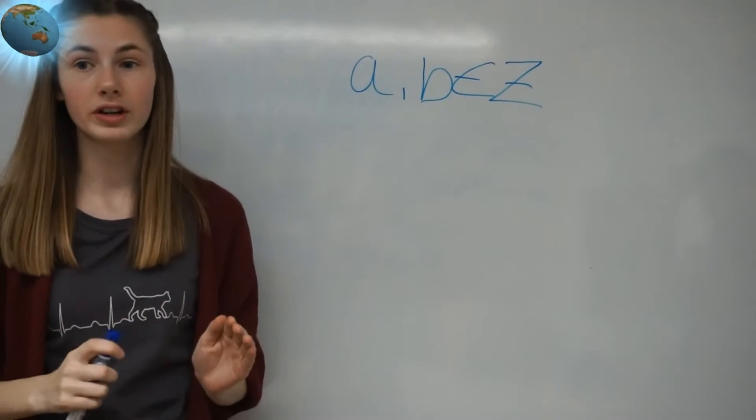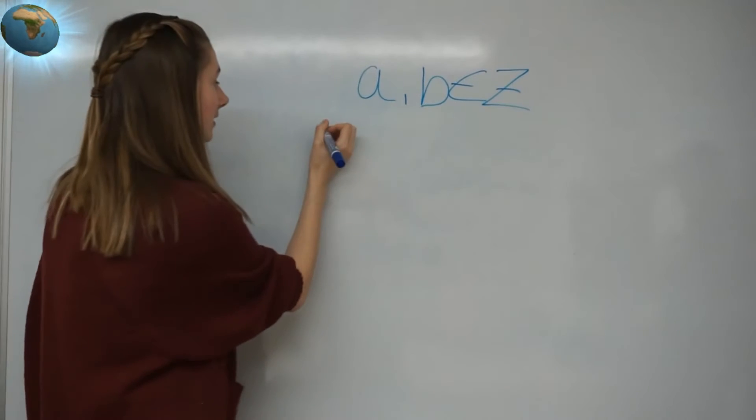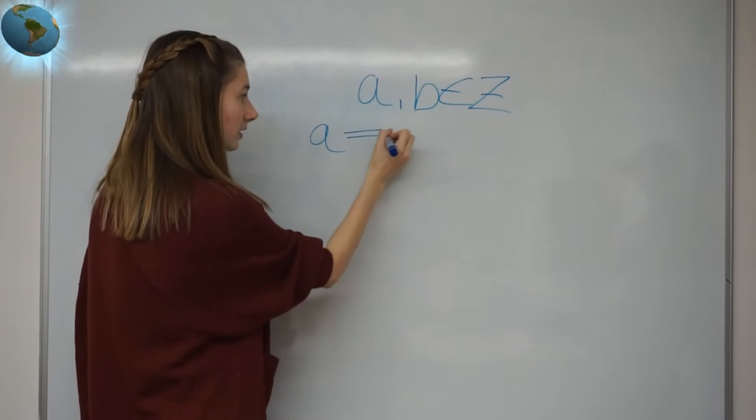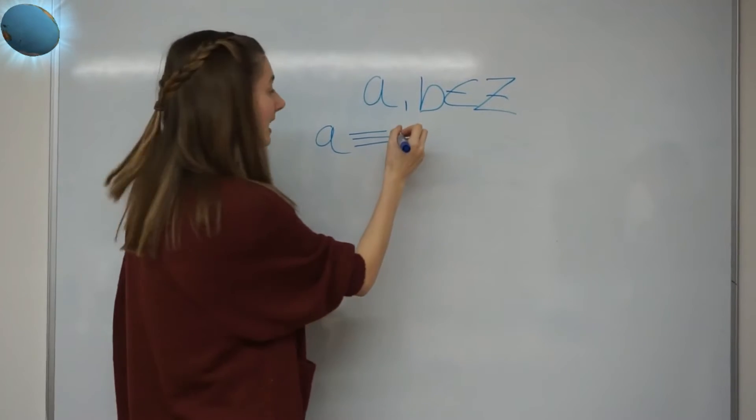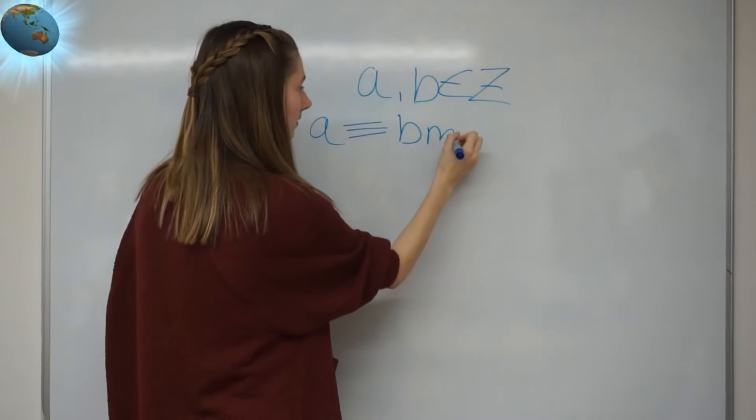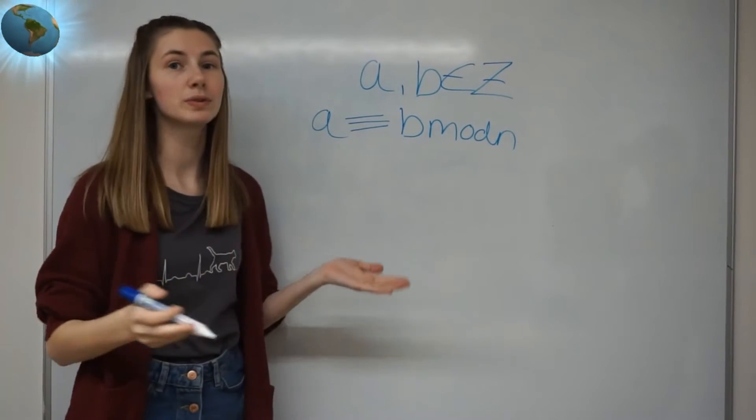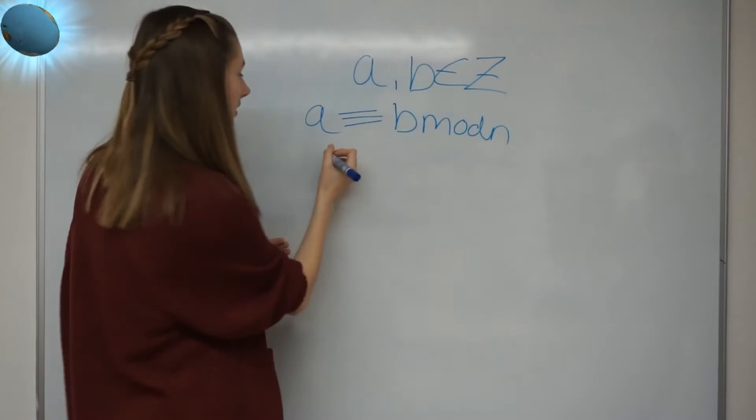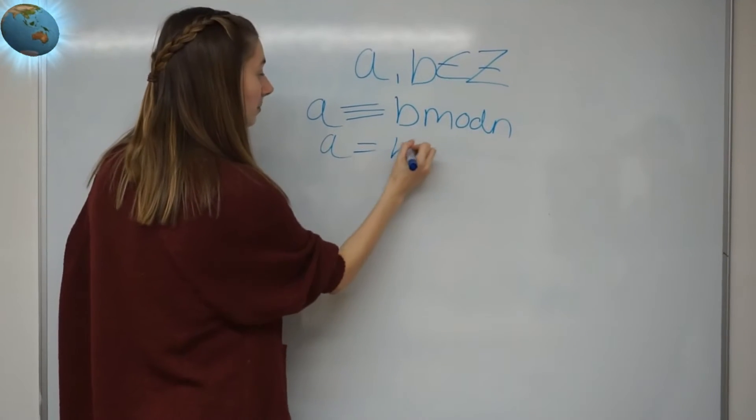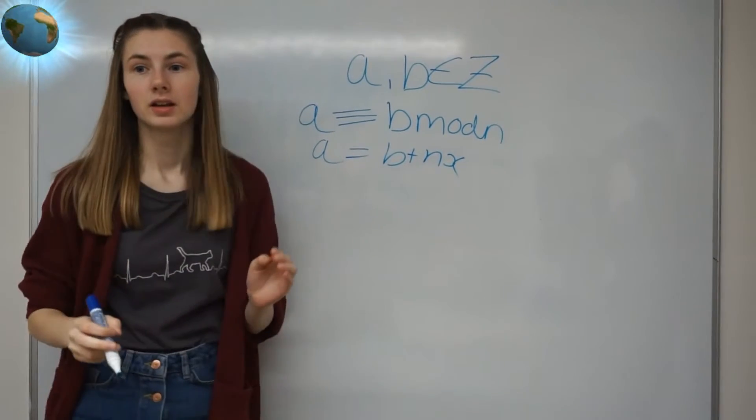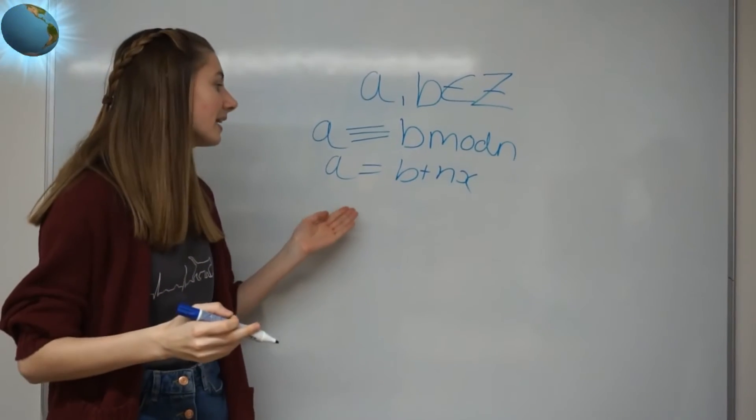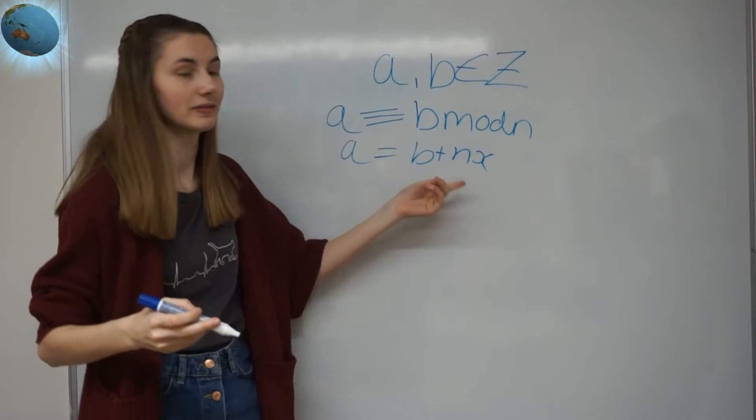Now, with congruence, we can write a to be congruent to b mod n. And that basically means that a equals b plus a set amount of n. So a equals b plus nx. Basically a is b plus n lots of x.